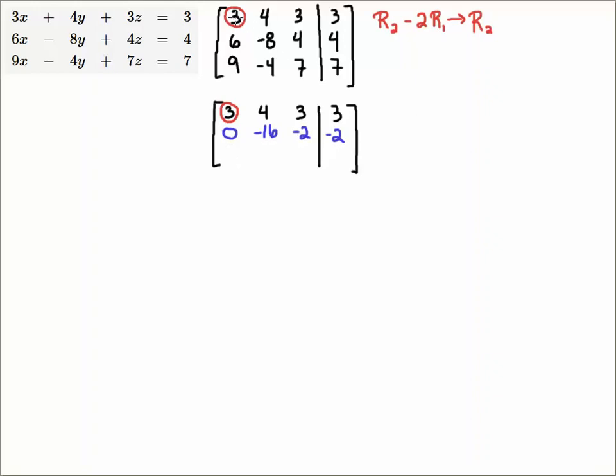Just follow the operations. Minus two times three is minus six plus six is zero. Minus two times four is minus eight. Minus eight is minus sixteen. Minus two times three is minus six plus four is minus two. Minus two times three is minus six plus four is minus two.